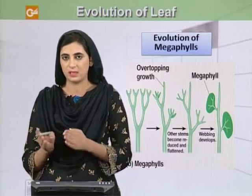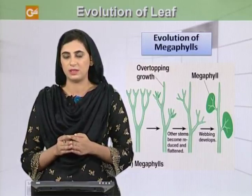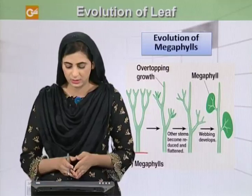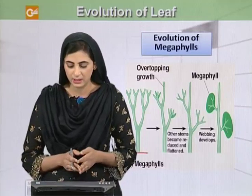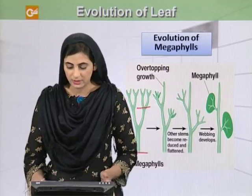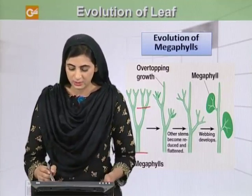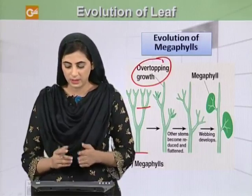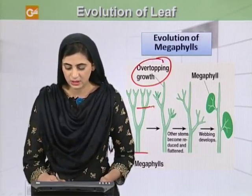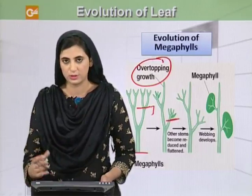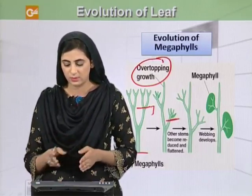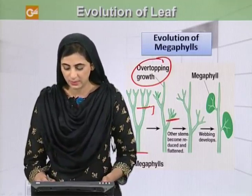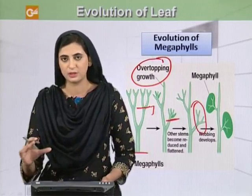We will see the various steps of evolution of the leaf. You can see here that this is a simple early land plant with dichotomous branching. When evolution of the leaf started, it is believed that the process of overtopping started first — where regular branching began to convert into irregular branching. Many irregular branches developed, and afterwards these irregular branches began to arrange themselves in one plane.